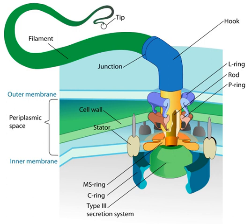However, when the cell's direction of motion is unfavorable, e.g., away from a chemical attractant, tumbles are no longer suppressed and occur much more often, with the chance that the cell will be reoriented in the correct direction. In some Vibrio spp., particularly Vibrio parahaemolyticus, and related proteobacteria such as Aeromonas, two flagellar systems co-exist, using different sets of genes and different ion gradients for energy. The polar flagella are constitutively expressed and provide motility in bulk fluid, while the lateral flagella are expressed when the polar flagella meet too much resistance to turn, providing swarming motility on surfaces or in viscous fluids.